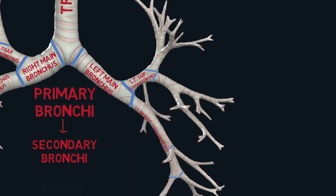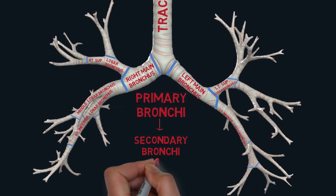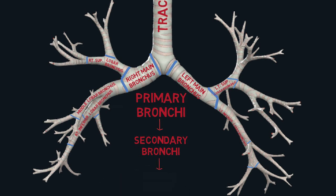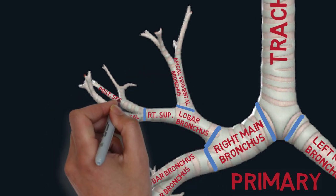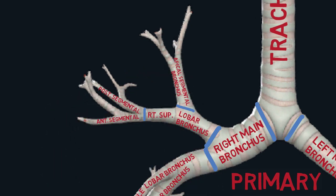For the right lung we have three lobes so the bronchi are the superior, middle and inferior lobar bronchi, and for the left lung you only have the superior and inferior lobar bronchi. The last type of bronchi is the tertiary bronchi, also known as the segmental bronchi, because they enter the lung into its specified bronchopulmonary segment, which is also the basic functional unit of the lung. From the superior lobe, there are three branches into the bronchopulmonary segments: the apical, anterior and posterior segmental bronchi.